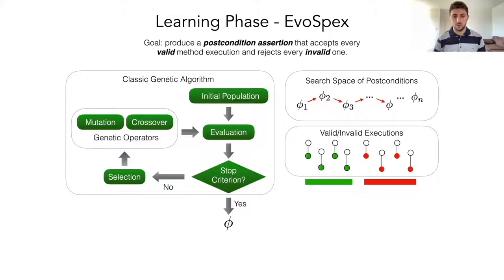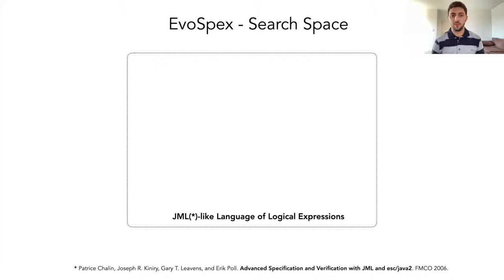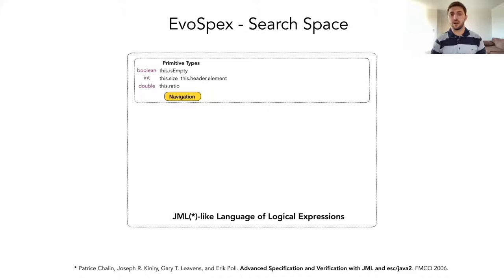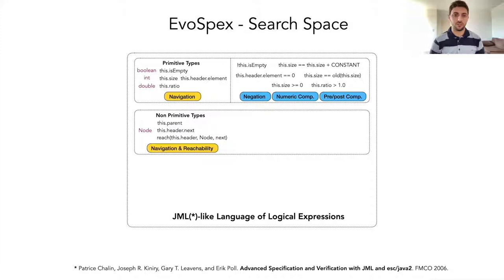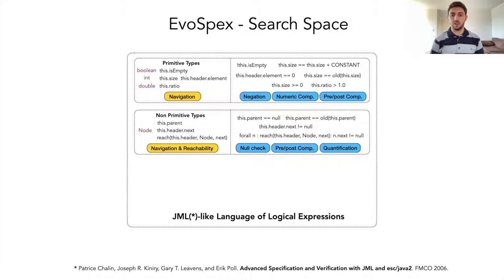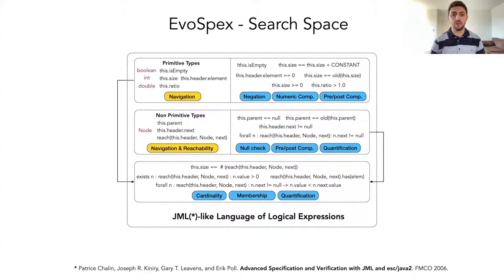The search space explored by our algorithm is composed of logical expressions built using a JML-like language. We use navigation and literals to build expressions denoting primitive types that are then used to build logical expressions involving negation, numeric comparisons, pre- and post-state comparisons. We also use navigation and reachability to build expressions denoting non-primitive types that are then used to create logical expressions involving null-checking, pre- and post-state comparisons, quantification expressions, and we combine expressions from these two worlds to build more complex ones involving cardinality, membership, quantification, and so on. These are essentially the building blocks of our post-conditions.